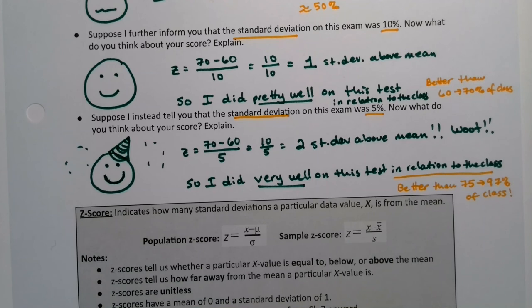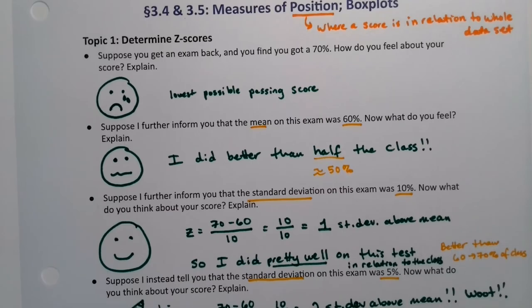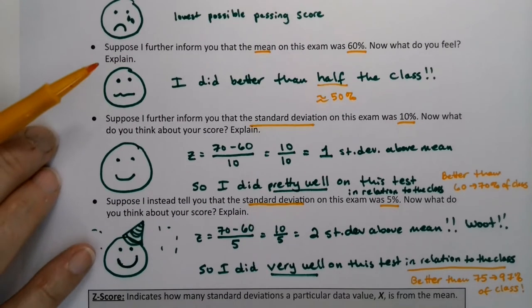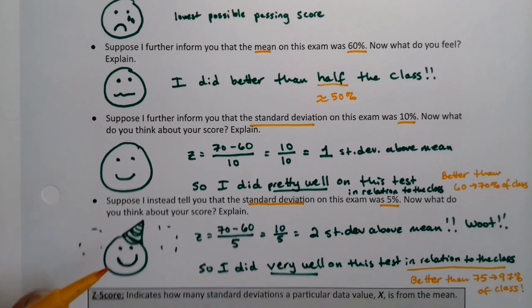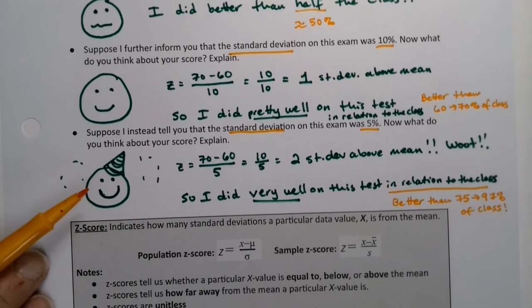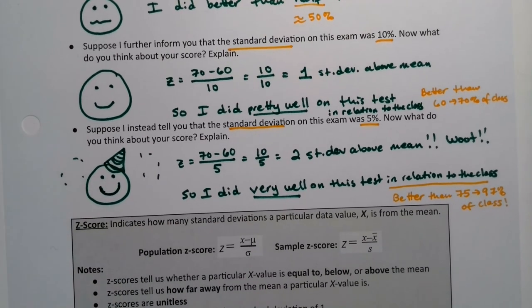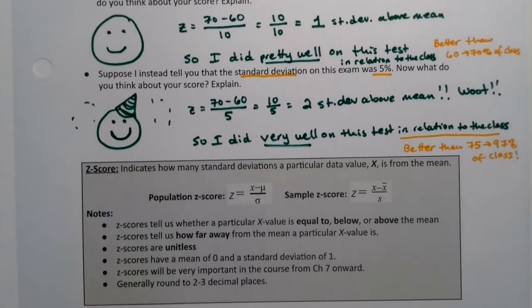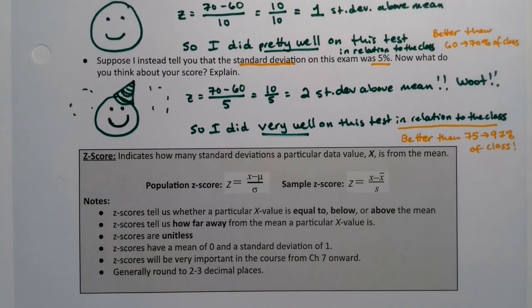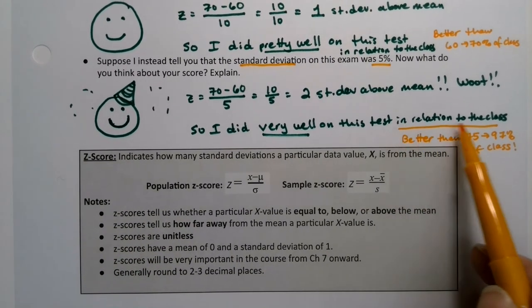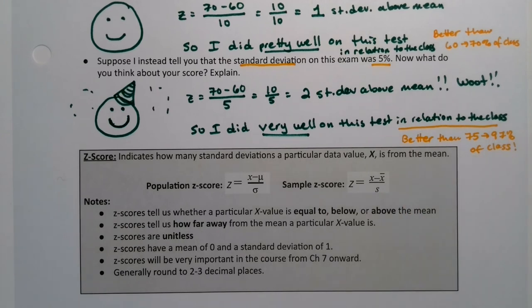It's still the same score of 70, right? So you know that you got the lowest possible passing score, but you know you did better, better, best, right? So you know, if this bottom scenario is the case, you know you scored better than almost everybody in the class. That feels really good, right? And that's what Z-score can measure for you. Z-score can help you figure out where you are in relation to the class. That's what it's measuring for you.